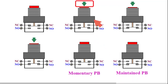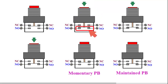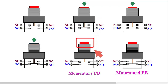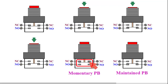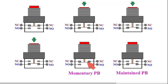For a momentary push button, when we press the button, the normally open contact becomes closed. But when we release the pressure — as seen in the figure — it returns to its normal situation: normally closed contact is closed and normally open contact is open. When pressure is applied the contact behavior changes; when released, it returns to its original condition. This is the function of a momentary push button.